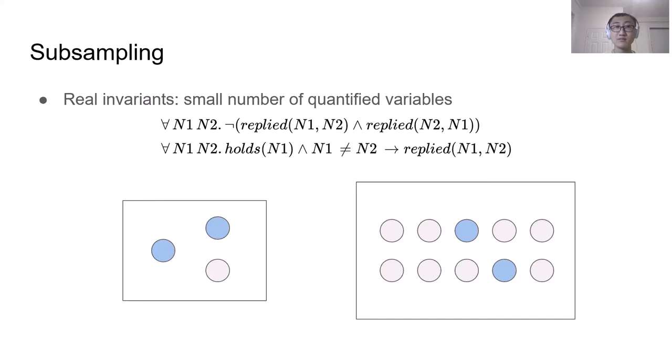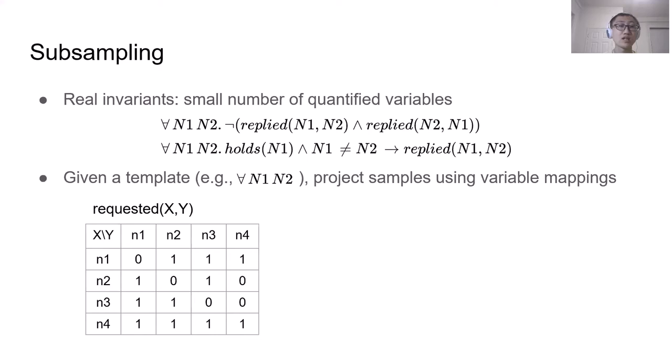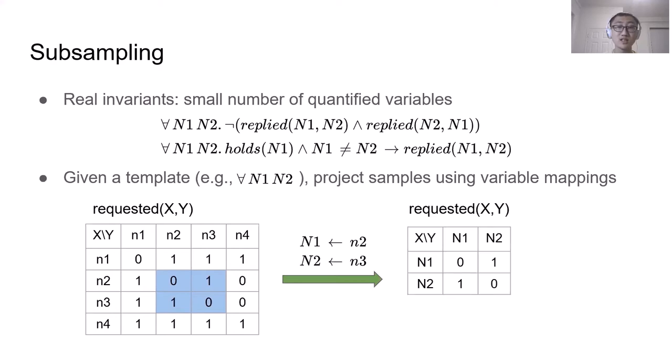Given a template, which is a set of universally quantified variables, we project samples using variable mappings. For example, in a four-node instance, requested is represented as a matrix. So this zero value means requested is false, so there is no request from N2 to N4. Given a variable mapping, let's say if concrete node N2 is mapped to quantified variable N1, and concrete node N3 is mapped to quantified variable N2, then we get a smaller sample, which we call a subsample. And in the subsample, we only have two nodes representing the two quantified variables. One sample can induce multiple subsamples. For example, if we have another variable mapping, then we get a new subsample. So later we will use these subsamples rather than the original samples for invariant enumeration and refinement.